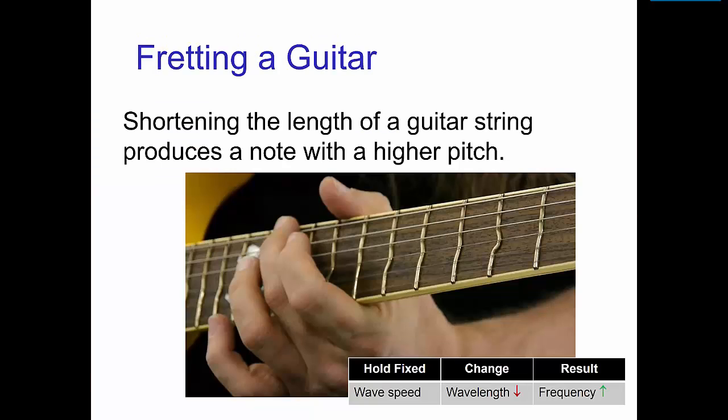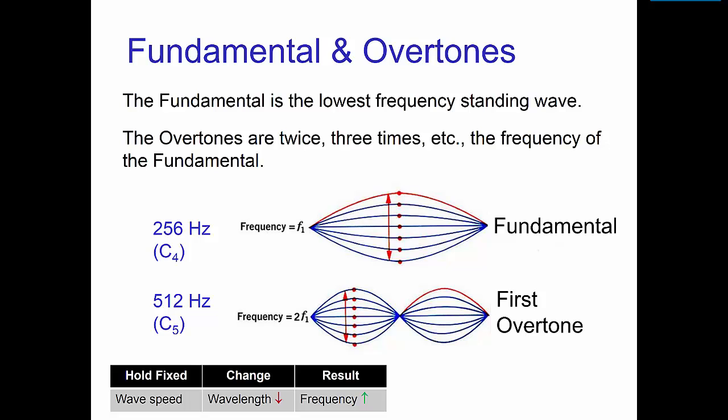On a guitar, you can shorten the length of a string by putting your finger on the fretboard. The shorter the distance between your finger and the soundboard, the higher the frequency of the sound wave. The longest wavelength for a standing wave is called the fundamental. If that's 256 hertz, then cutting the wavelength in half doubles the frequency. That takes us up to the first overtone, which is the same musical note in the next octave.